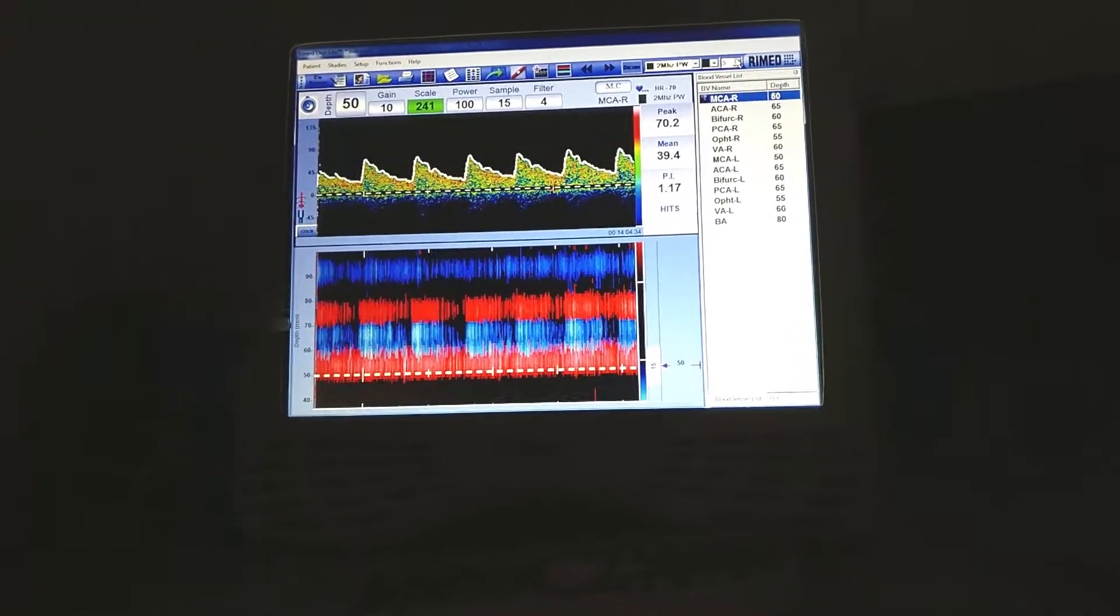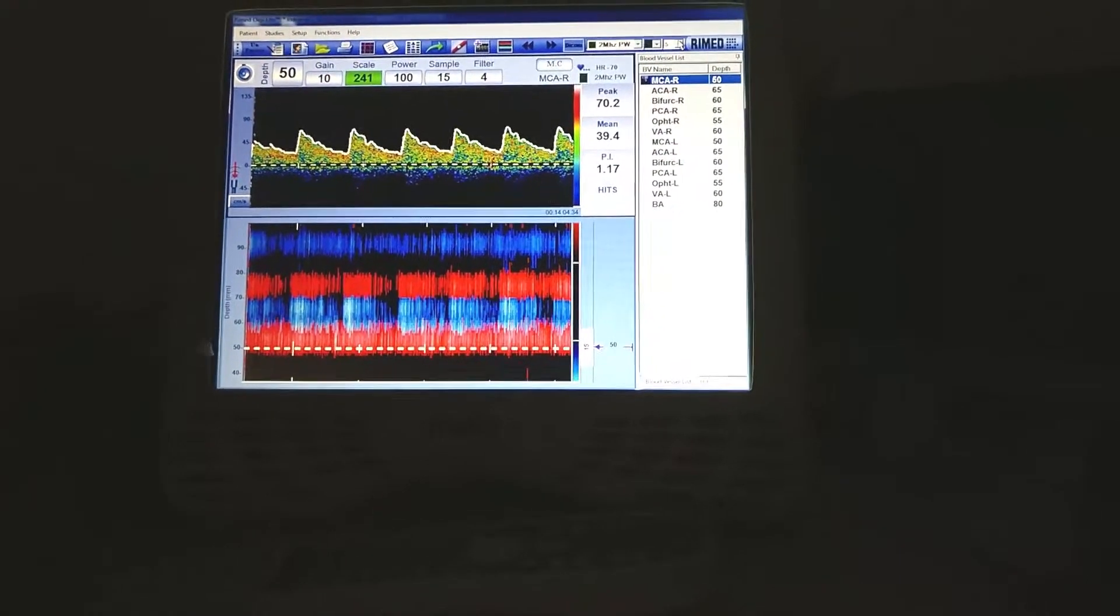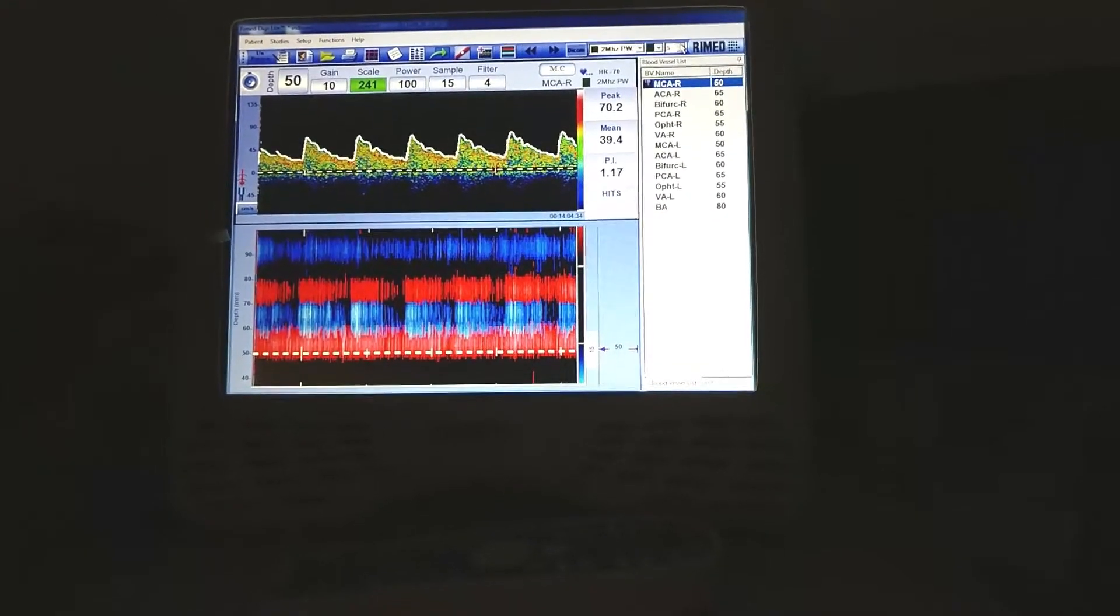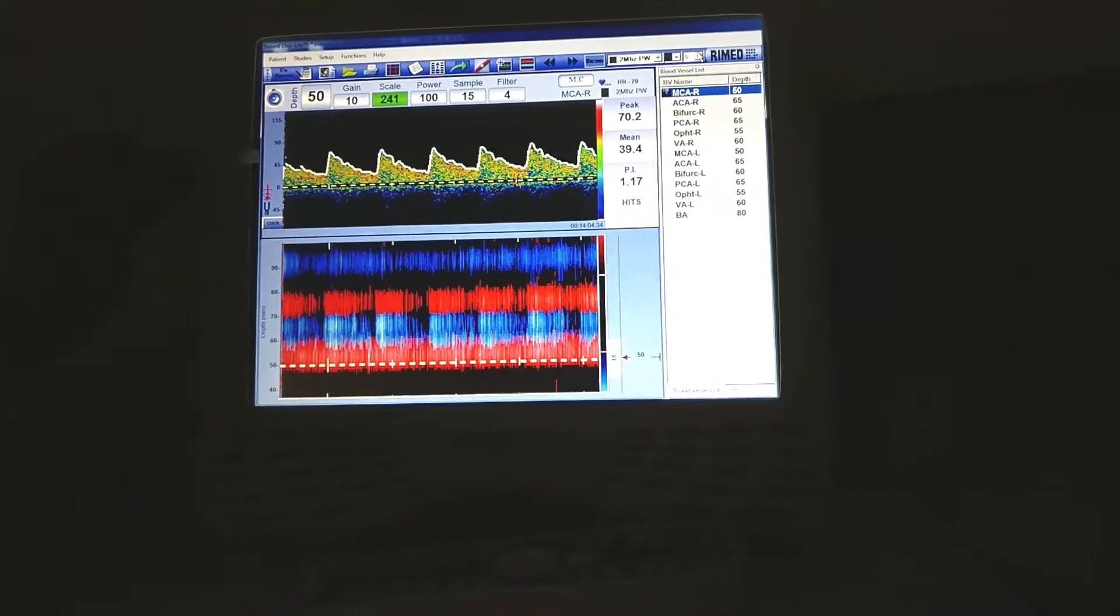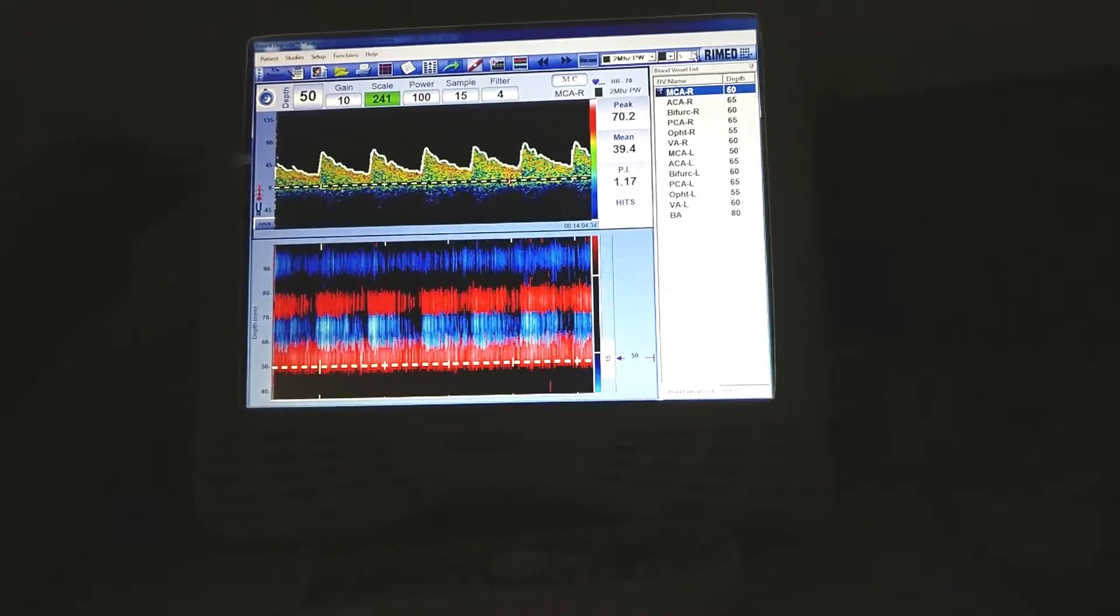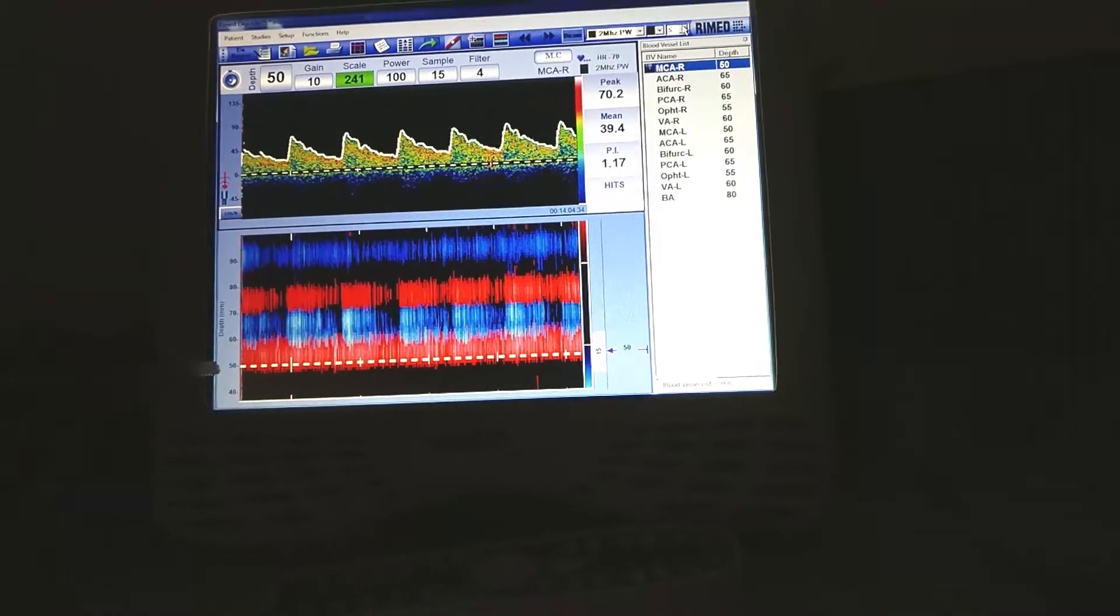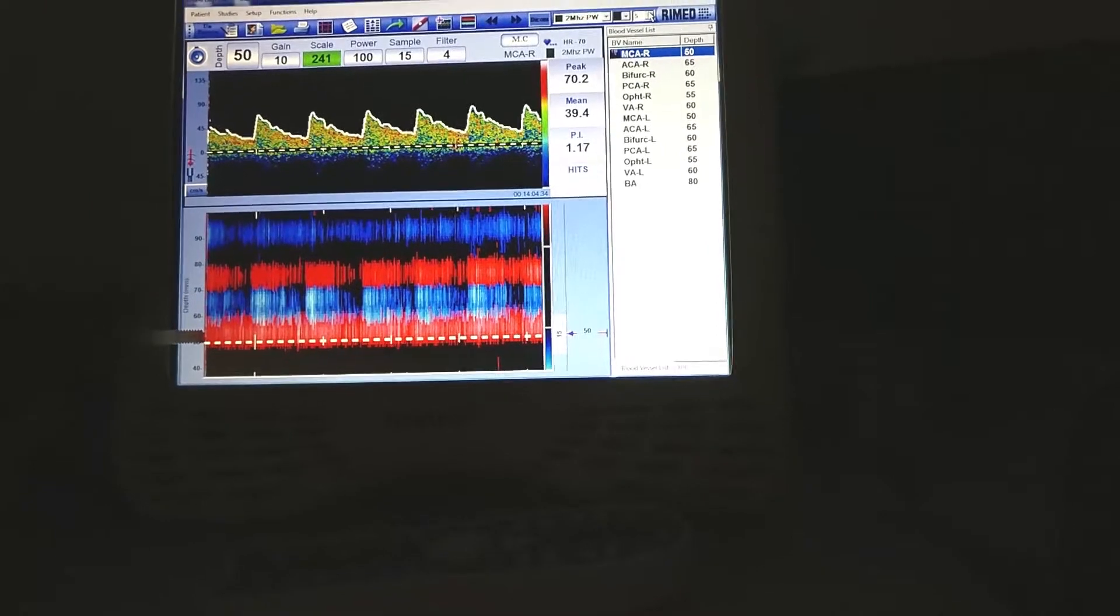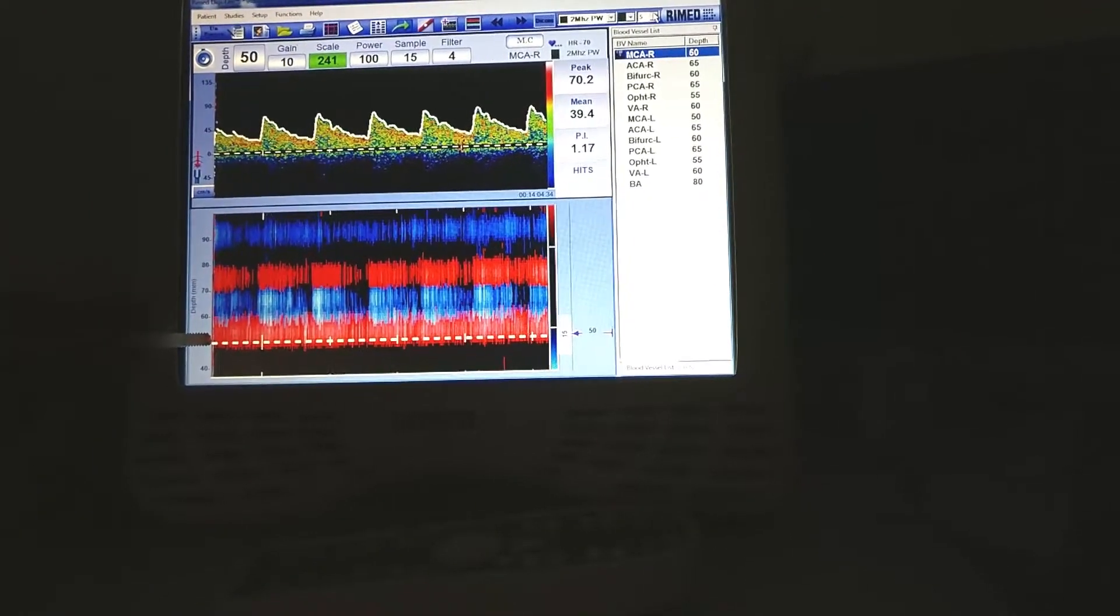On the left hand side is the depth. In this particular instance we have insonated all arteries from a depth of 50 millimeter to a depth of approximately 100 millimeter. We can get a spectral waveform at any given depth. In this instance we have a spectral waveform at 50 millimeter depth. We know the direction of flow is towards the probe and at 50 millimeter we would insoninate the ipsilateral M1 middle cerebral artery.